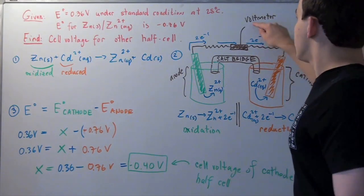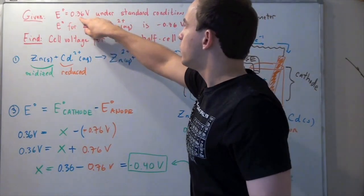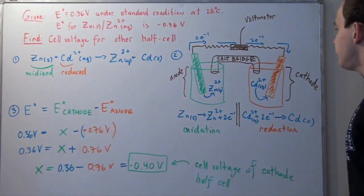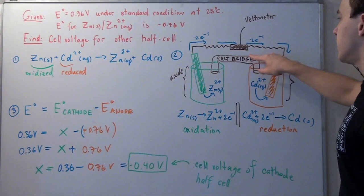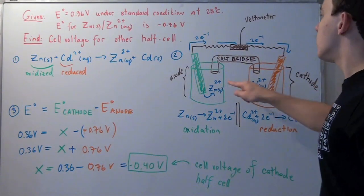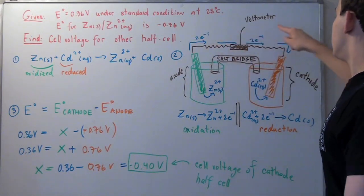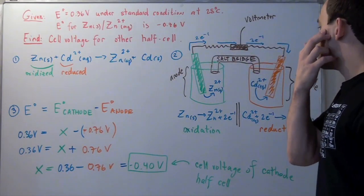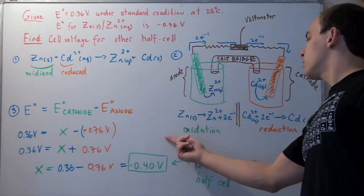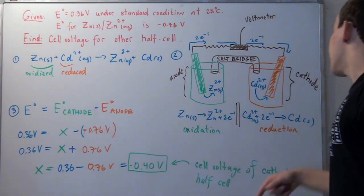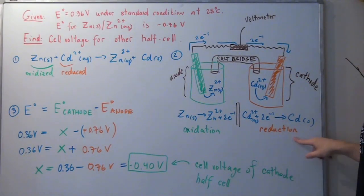The voltmeter is the thing that reads 0.36 volts. This salt bridge is placed here because it plays the role of closing the circuit. Without the salt bridge, this would not function—the electrons would not flow, and that's very important. Once again, our anode is the place where oxidation occurs, and our cathode is the place where reduction occurs.